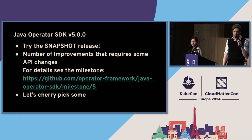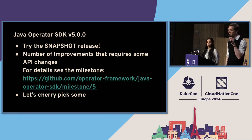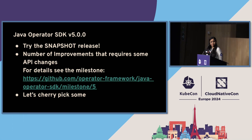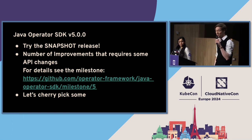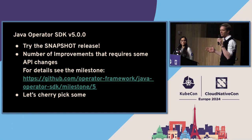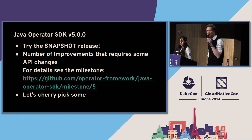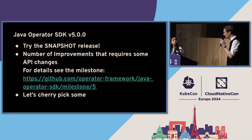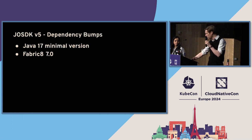Java Operator SDK recently joined the project, and they are doing a lot of active development with version 5.0. As of right now today, the snapshot release of that is available if you want to go try it. This is an opportunity to implement a bunch of breaking changes that have been piling up over the past couple of months. For more details, you can click on that link and see some milestones.